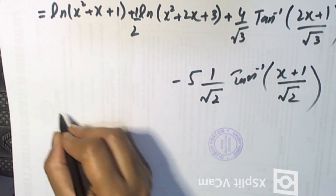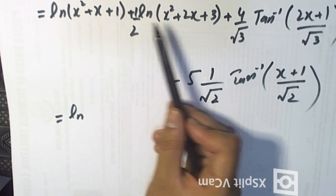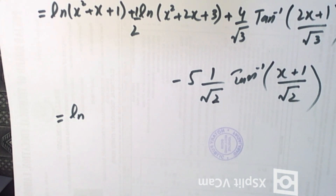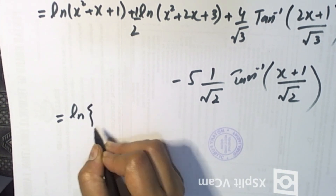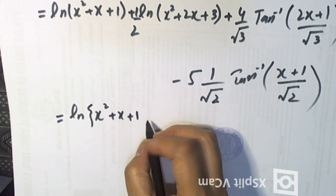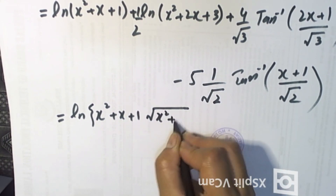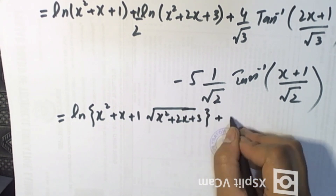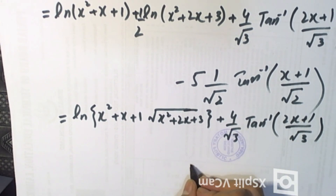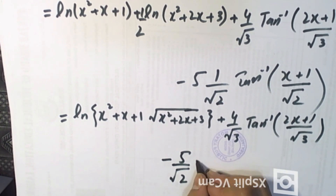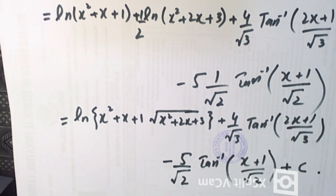Now we simplify using log properties: any number before log becomes its power, and two log terms added can be written as a product inside the log. So we write log of √[(x² + x + 1)(x² + 2x + 3)] — the half powers become square roots — plus (4/3) tan inverse (2x + 1)/√3, minus (5/√2) tan inverse (x + 1)/√2, plus C. This is the final answer.